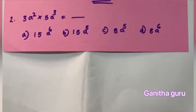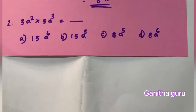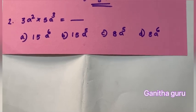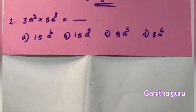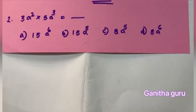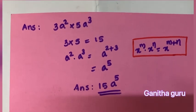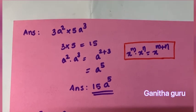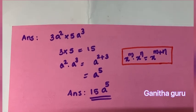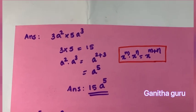Next question: 3a squared into 5a cubed. We multiply the coefficients: 3 into 5 equals 15. For the exponents, we apply the multiplication law — a raised to 2 into a raised to 3 equals a raised to 2 plus 3, which is a raised to 5. So the answer is 15a raised to 5.